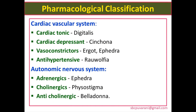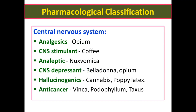Drugs acting on the cardiovascular system — cardiac tonic: digitalis; cardiac depressant: cinchona; anti-hypertensive: Rauwolfia. Drugs acting on the autonomic nervous system — cholinergic and anticholinergic: physostigma, belladonna. Drugs acting on the central nervous system — CNS stimulant: coffee; analgesic: opium; CNS depressant: belladonna, opium; hallucinogenic drug: cannabis, poppy; anti-cancer: vinca, podophylla.